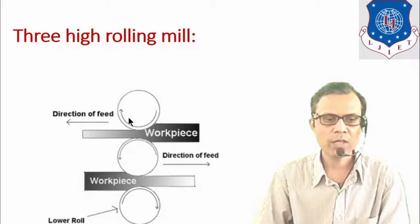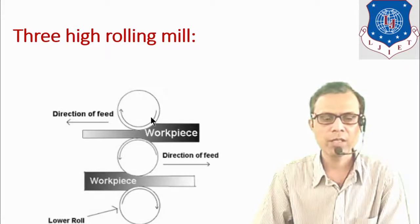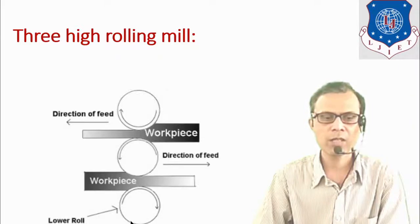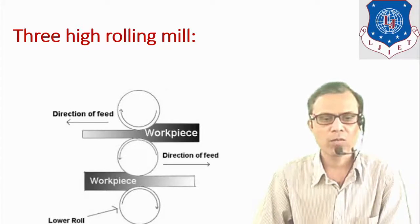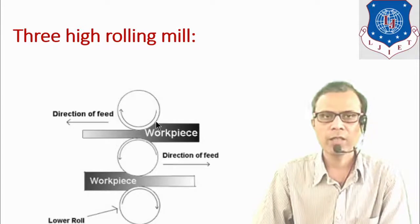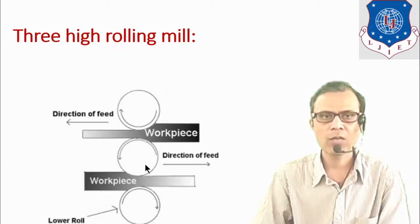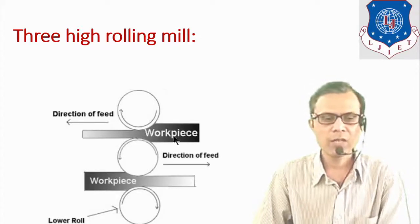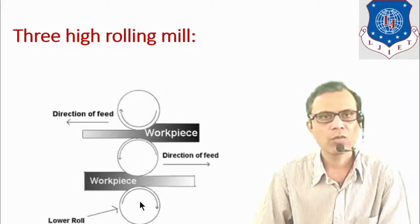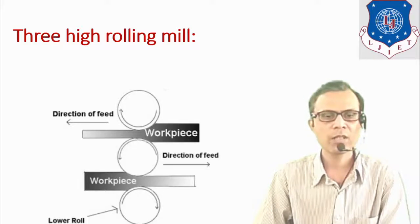In the three-high mill, the upper roll and lower roll rotate in the clockwise direction while the intermediate roll rotates in the anticlockwise direction. The workpiece is fed between the upper and intermediate roll in one direction, and in the reverse direction it is fed between the intermediate roll and the lower roll, resulting in a high production rate.